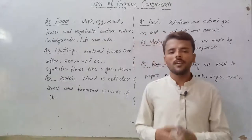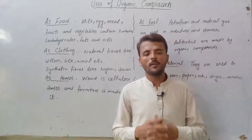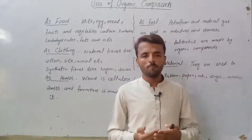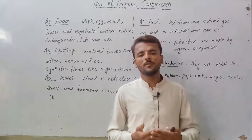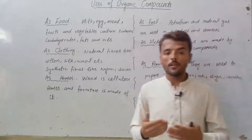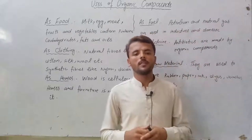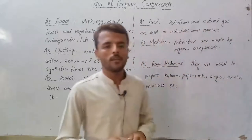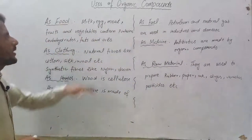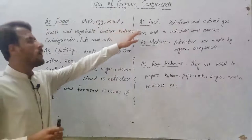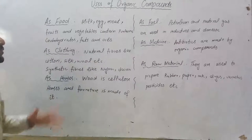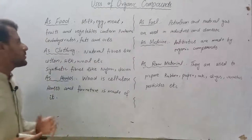I have 6 types of uses here. We will see how we can use them as food, how we can make our industries, and how we can make our houses. Let's start with the topic of the uses of organic compounds. Organic compounds are made up of carbon and hydrogen and their derivatives. The sources from animals and plants are now going to be used.